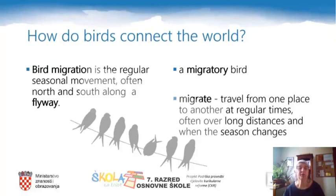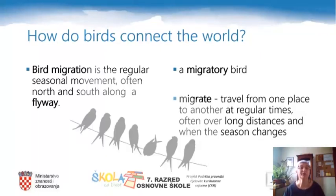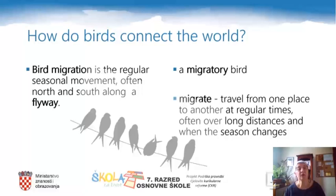If you don't know much about migratory birds, please stop this video and copy the words that you can see on this screen. A migratory bird is a bird that doesn't live all year long in the same place but migrates. To migrate means to travel from one place to another at regular times — usually in spring and in autumn. Bird migration is the term we are going to learn today, along with flyways: the paths that migratory birds follow every year.